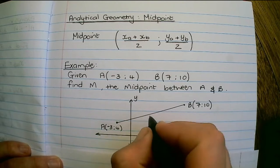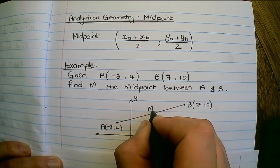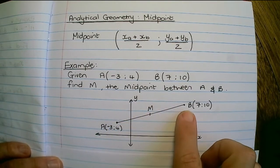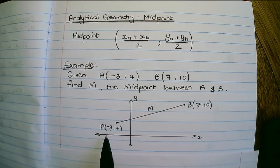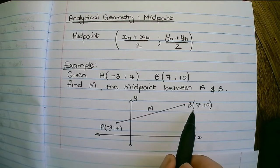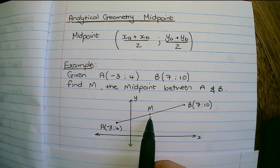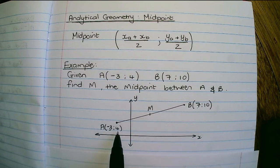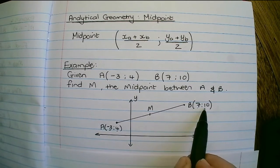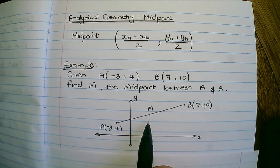So we want to find M, the exact middle between these two points. What we do to find the midpoint is we add up the x value of A and the x value of B, and that will give us the middle between the x's. Then we add up the y value of A and the y value of B and divide that by two, and that will give us the center of the y's.